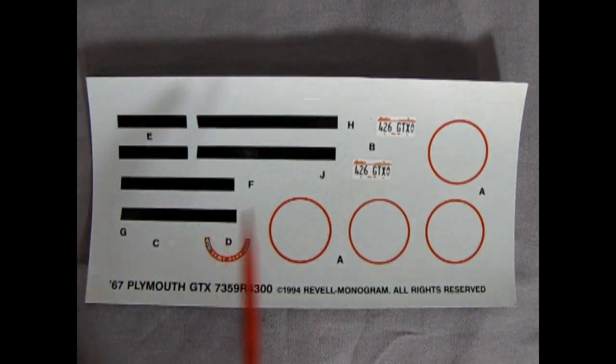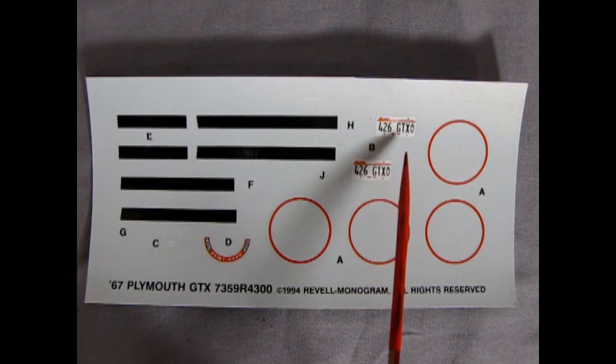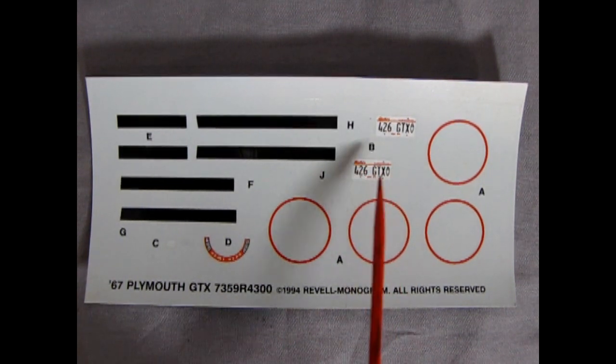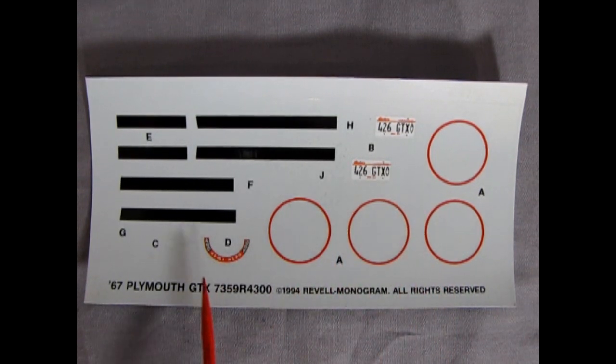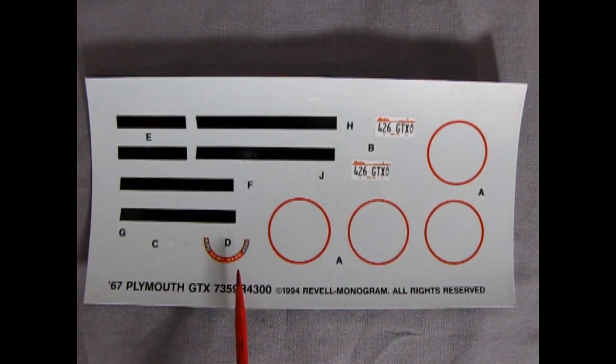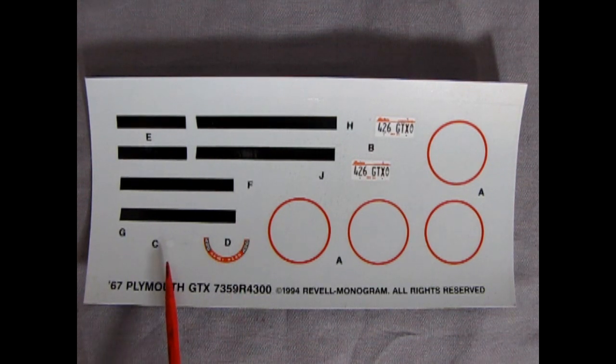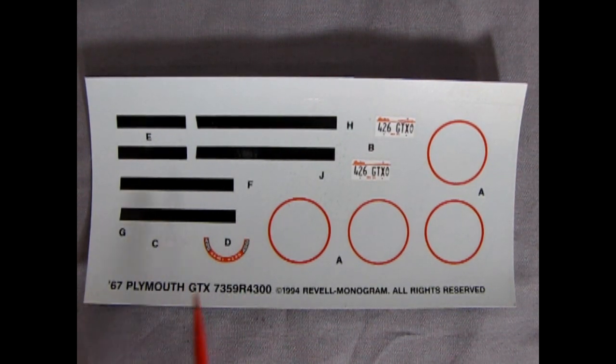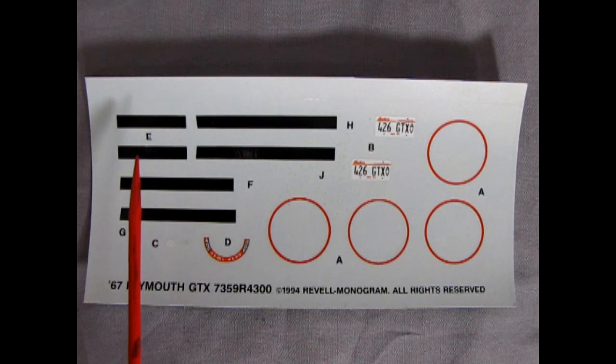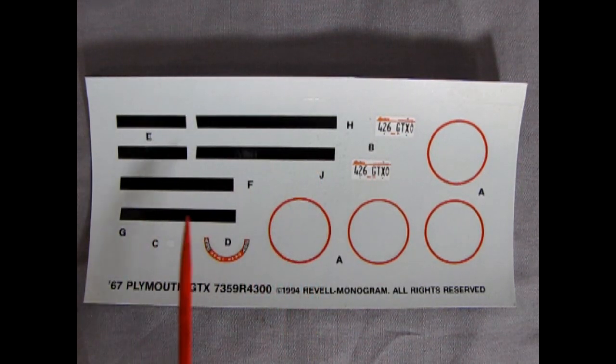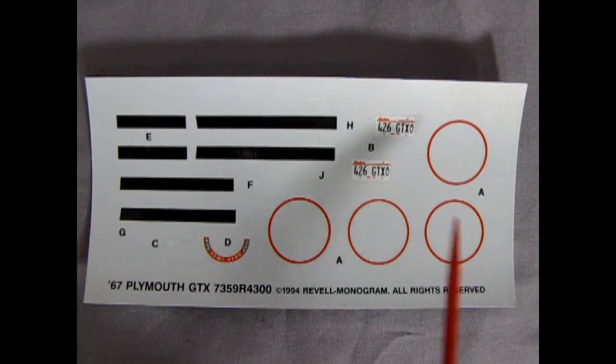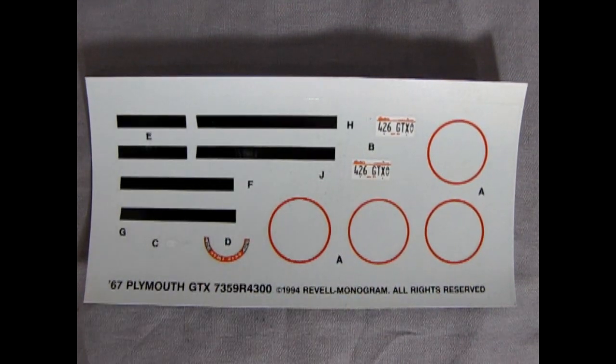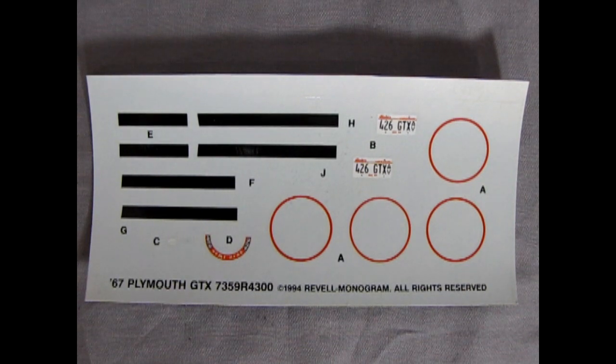Last but not least, we have our decal sheet, which has some Illinois 426 GTX license plates sitting here. The red walls for the red wall tires. 426 Hemi decal. There's also a little white decal here for an under the hood feature. And last on the sheet is our black stripes for the body and hood. So very simplistic decals, very plain, but they will give your model that extra little feature that it needs. And that completes our review of the Revell 1967 Plymouth GTX Hemi.